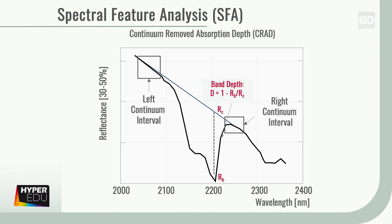Another important quantification method is the spectral feature analysis. It is based on the fact that contents or properties of materials are often manifested as spectral absorption features in the reflectance spectra. The spectral features used for the feature analysis may be the absorption band depth, but also the slope of the spectrum in a certain spectral range, or the ratio of selected spectral bands. These spectral features are then correlated to measured ground truth data to produce quantitative maps of material contents or properties.